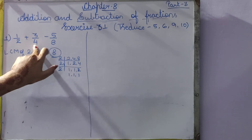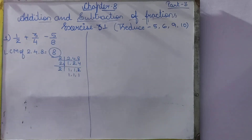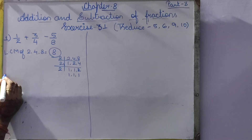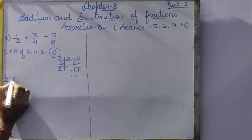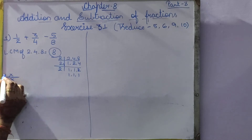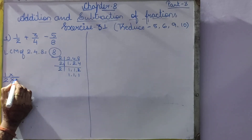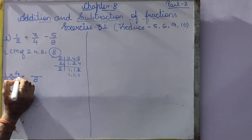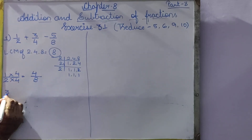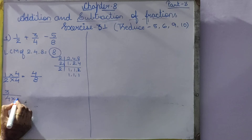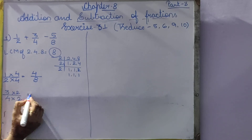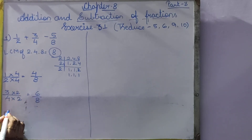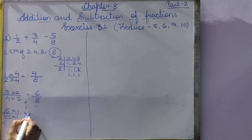All 3 denominators are different. We take out the LCM of 2, 4, and 8, and we get the LCM as 8. So we make the same denominator. 1 by 2 becomes 4 by 8 — 4 ones are 4. Then 3 by 4: 4 twos are 8, so 3 twos are 6 by 8. And 5 by 8: 8 ones are 8, and 5 ones are 5. So all three fractions have the same denominator 8.